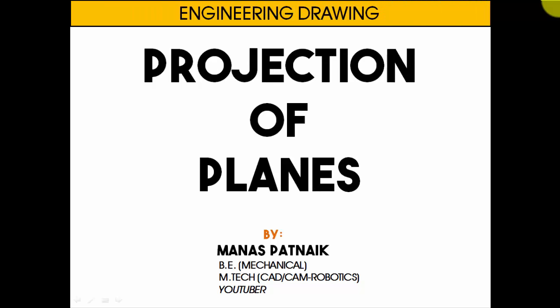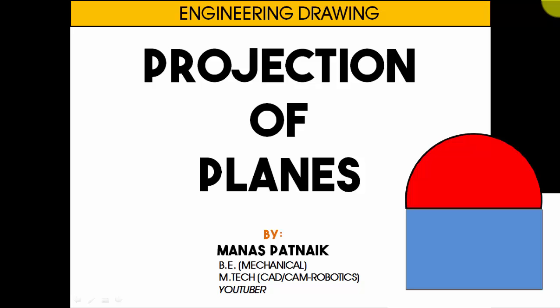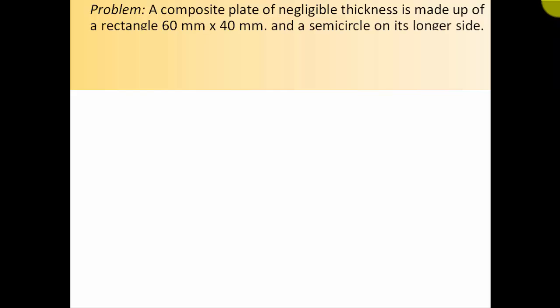Hey guys, this is your friend and tutor Manas Patnaik. This time around we're going to be dealing with projection of planes, and the object I've taken up is a composite plane. A composite plane is a combination of two different geometrical shapes. In this particular problem there is a rectangle, and on the longer side of the rectangle you'll see a semicircle. So without further ado, let's get down with the problem.